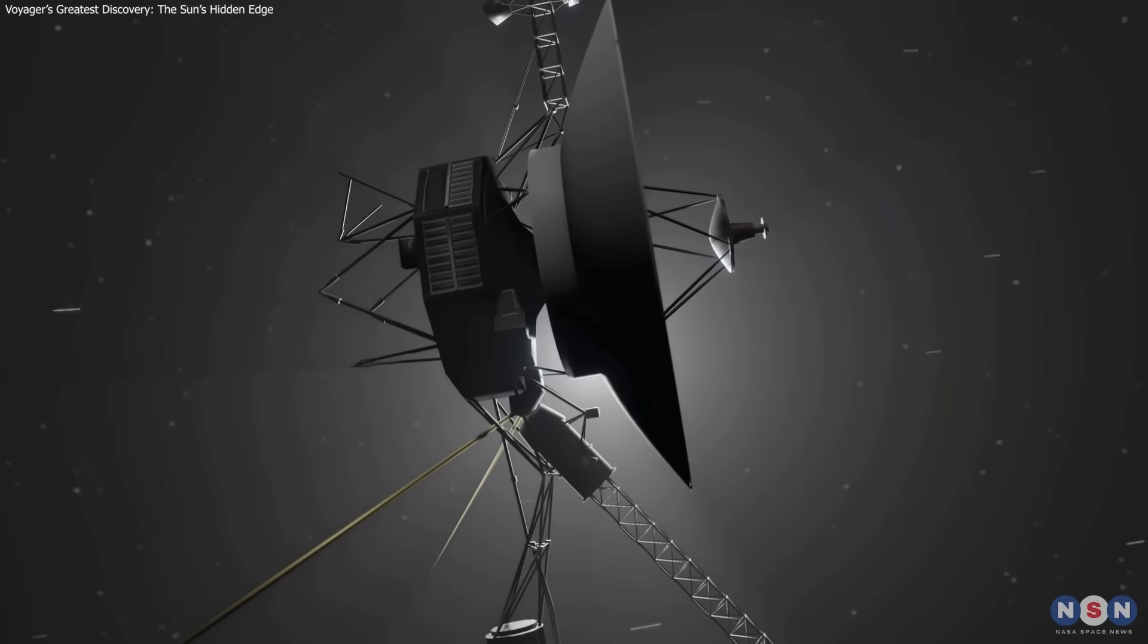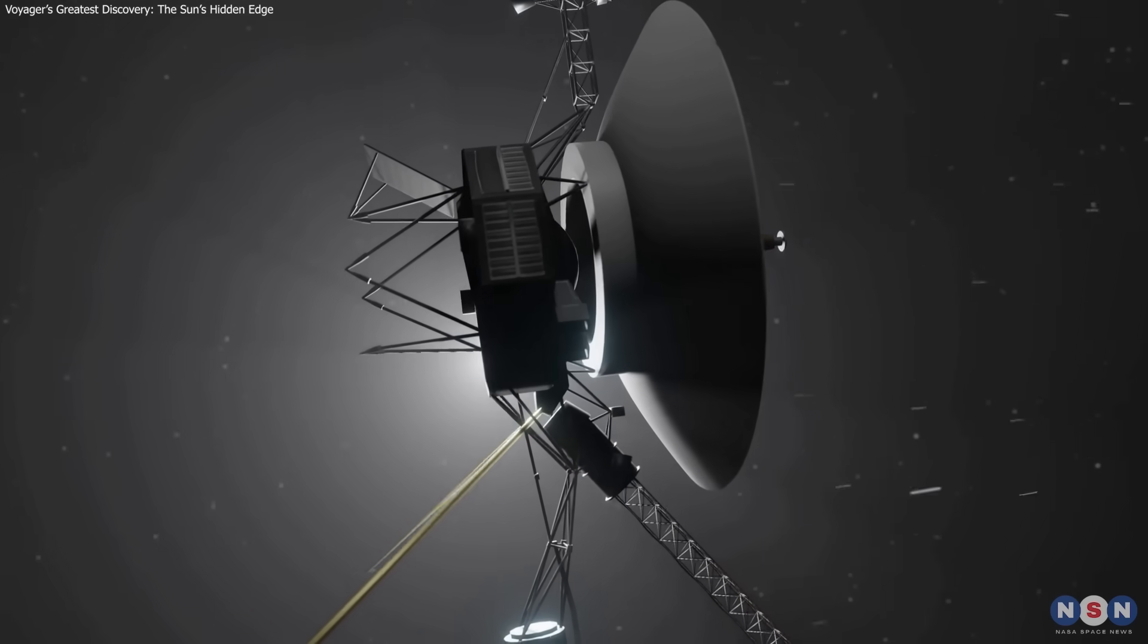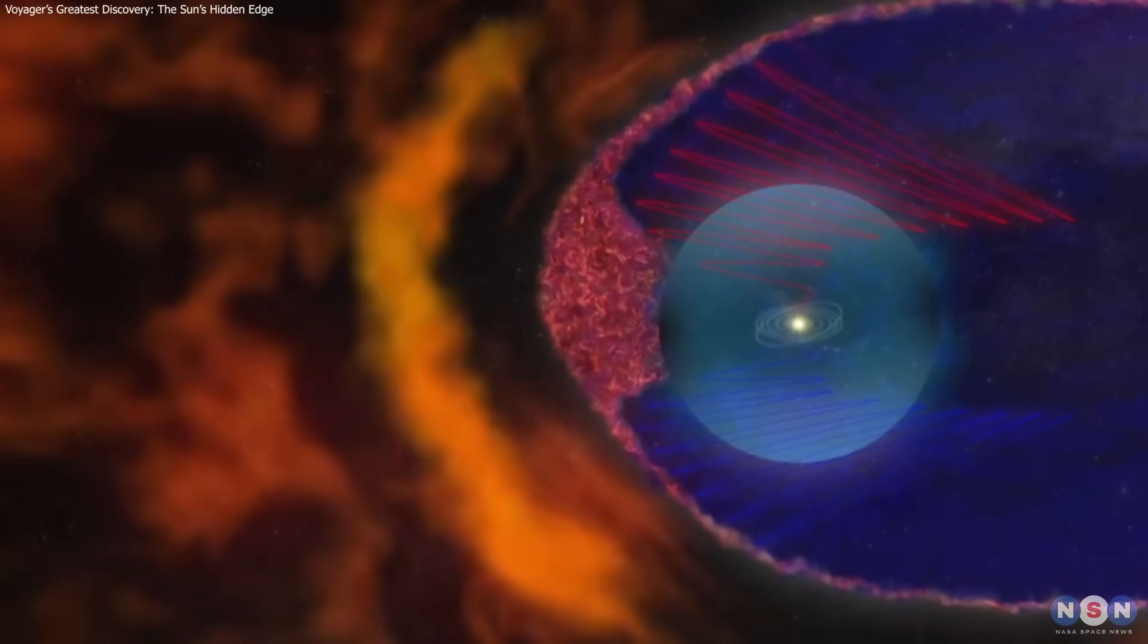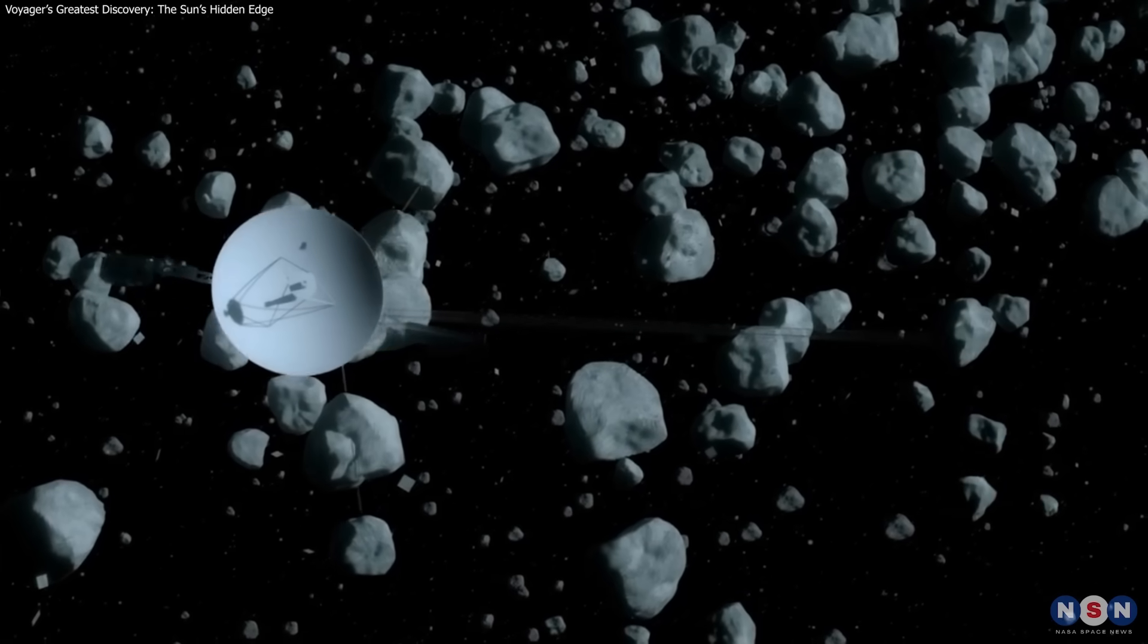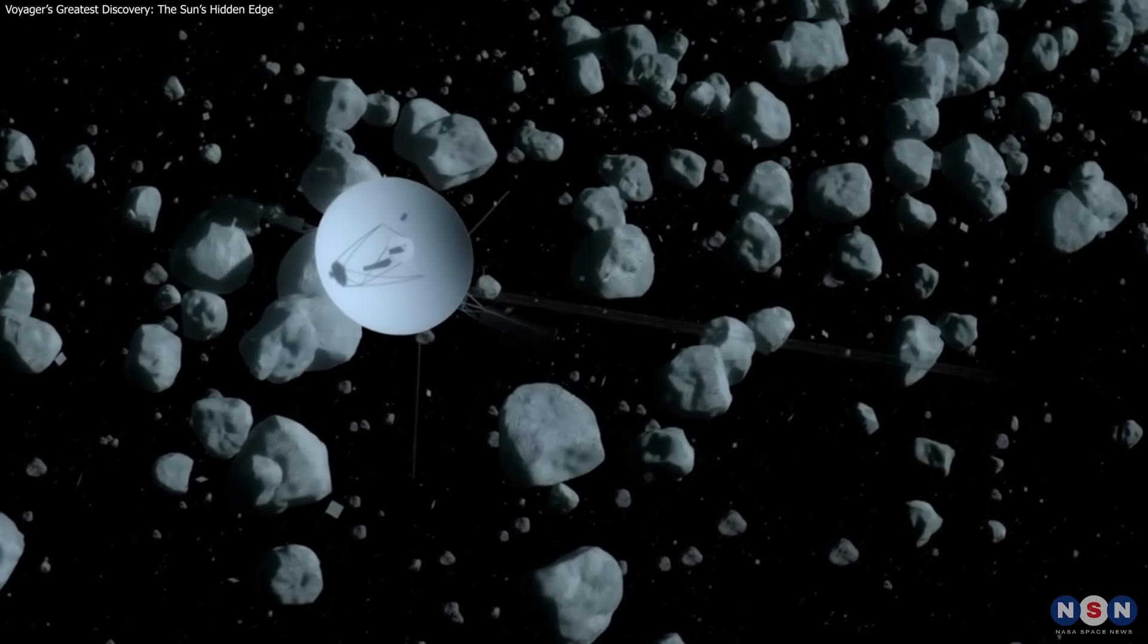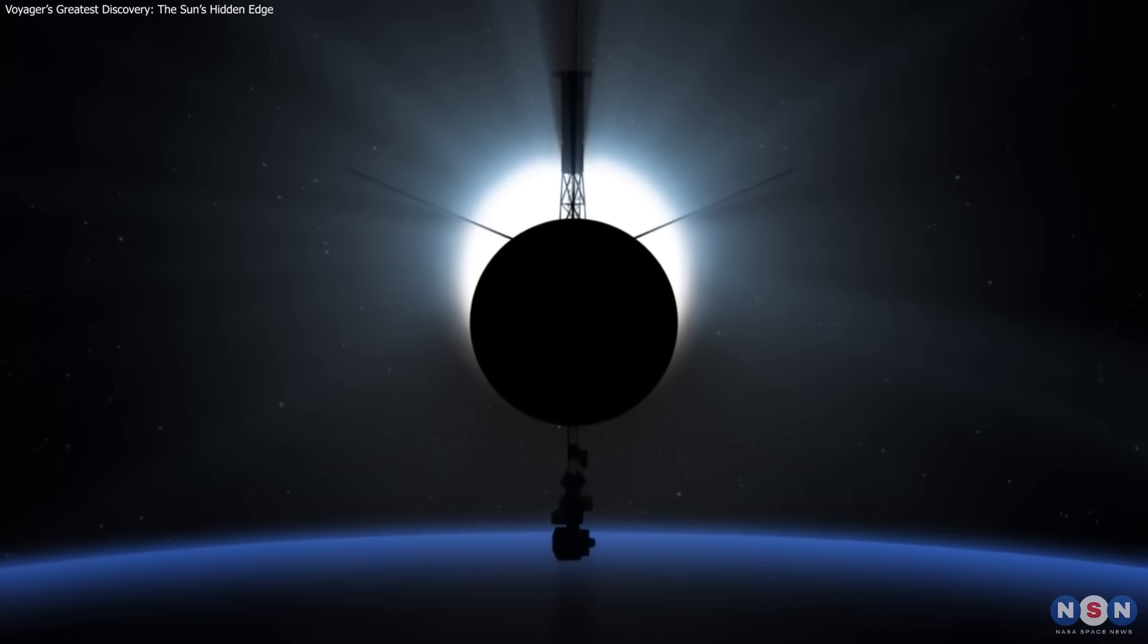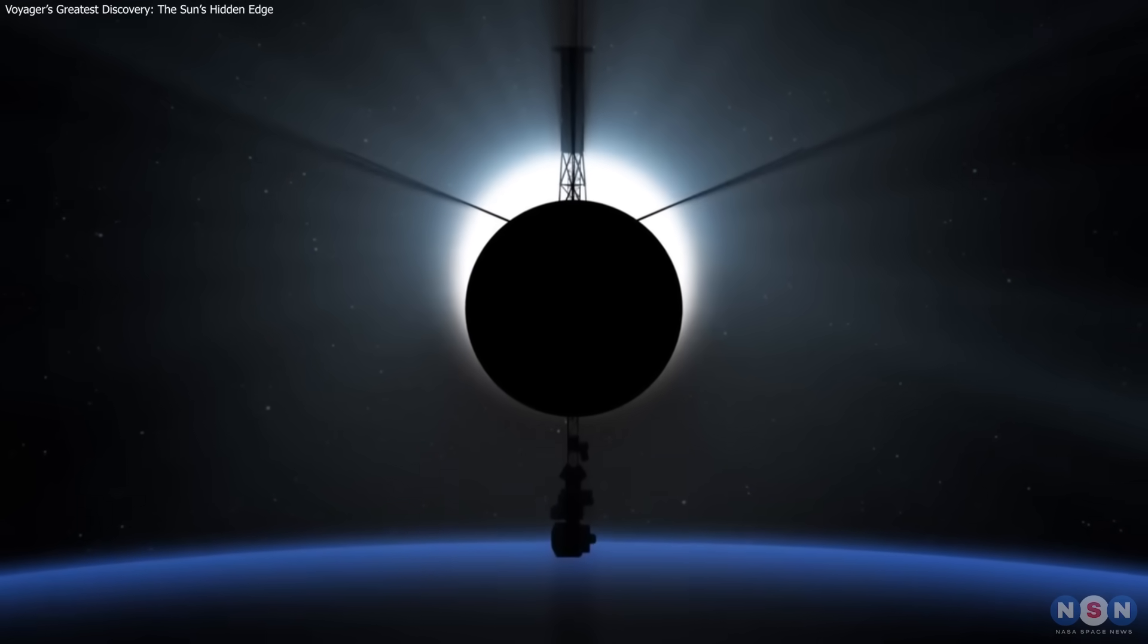Voyager's discovery revealed that the edge of our solar system isn't silent. It's a superheated frontier, alive with plasma and motion. Even after nearly 50 years, the spacecraft continued to expand humanity's reach into interstellar space. At the solar system's edge, Voyager found not emptiness, but the pulse of a living Sun.